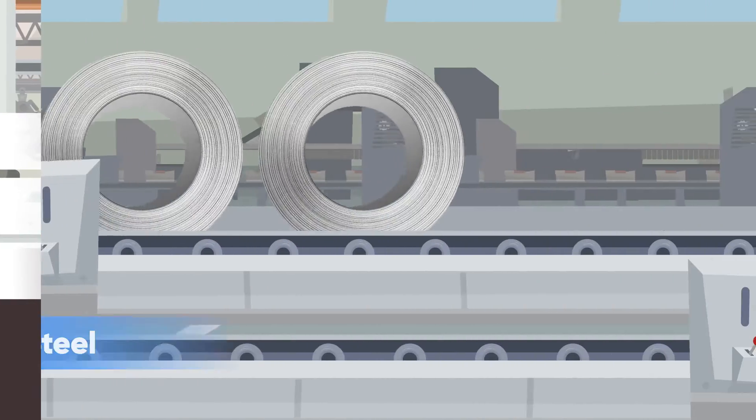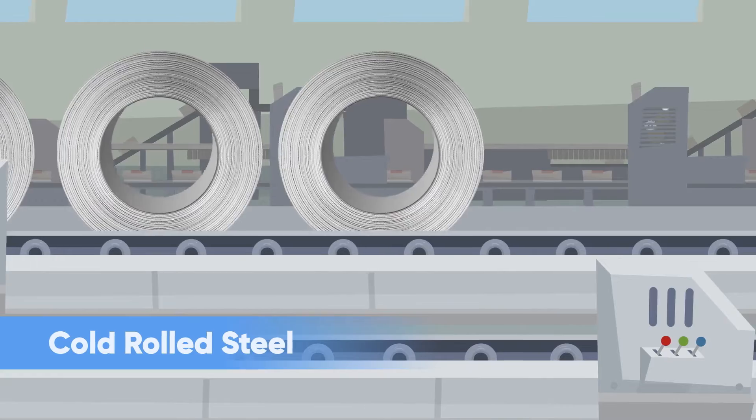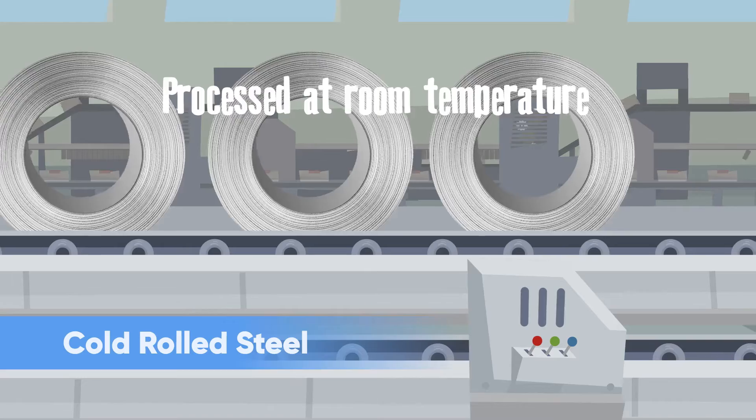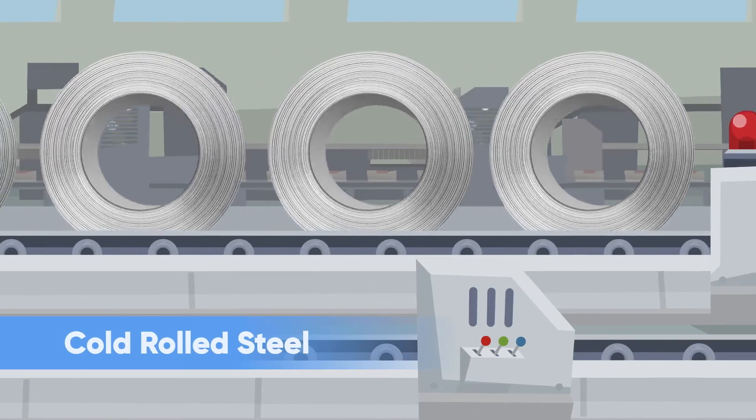Now let's cool things down. Cold rolled steel actually starts out as hot rolled steel. The difference is that it gets further processed at room temperature, giving it that smooth, refined finish.